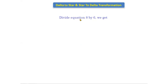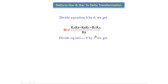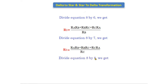Dividing equation 8 by equation 6 gives R1 = (RaRb + RbRc + RcRa) / Rb. Dividing equation 8 by equation 7 gives R2 = (RaRb + RbRc + RcRa) / Rc. Dividing equation 8 by equation 5 gives R3 = (RaRb + RbRc + RcRa) / Ra. These are the final star-to-delta transformation equations.